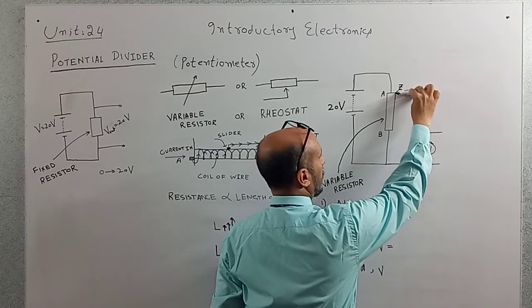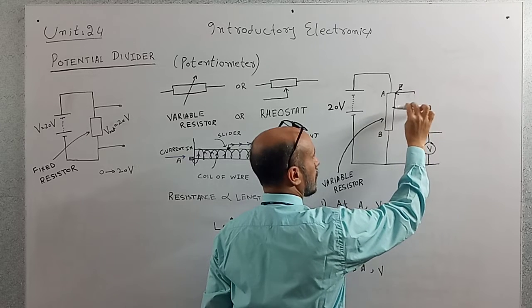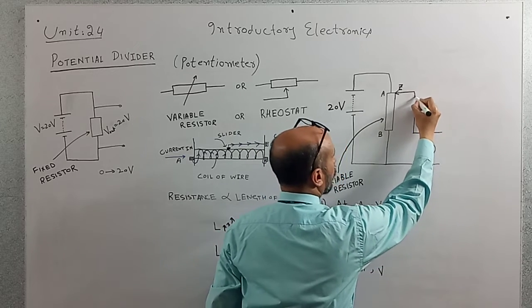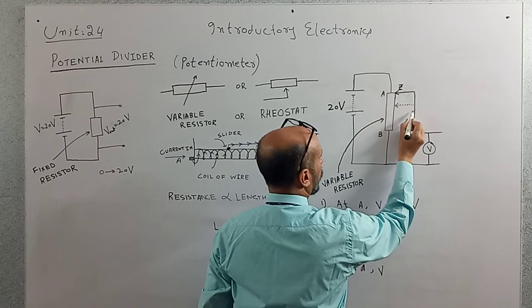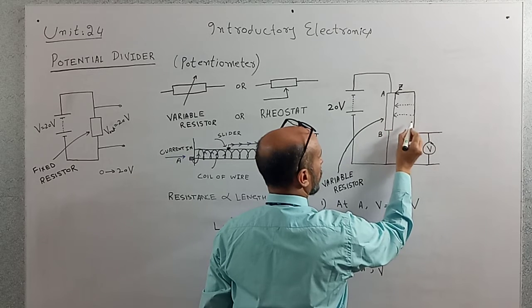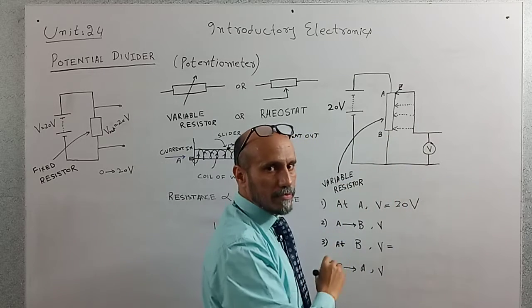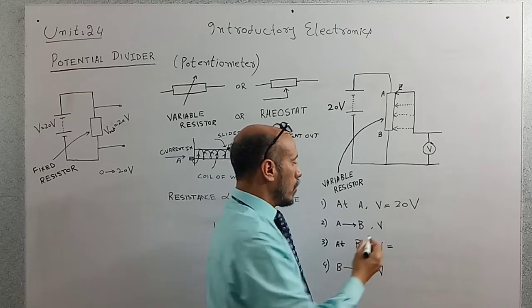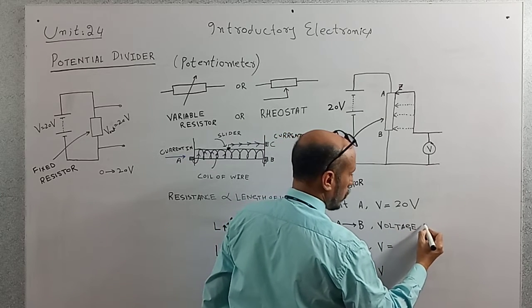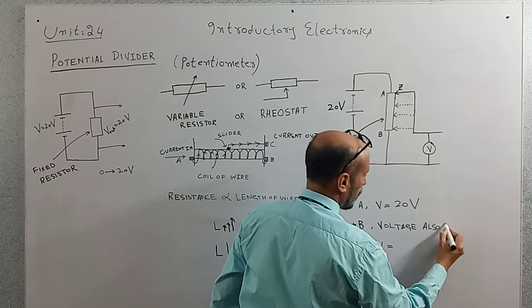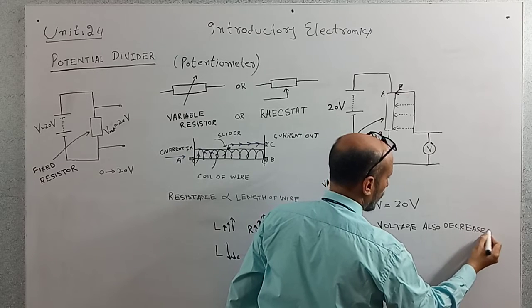When we move the slider from point A towards point B, the resistance of the circuit decreases, due to which the voltage also decreases. When the slider reaches point B, resistance equals zero and voltage equals zero.